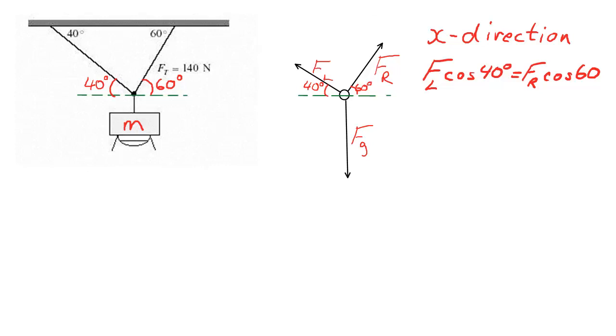It's always a good idea to solve whenever you can. So FR, remember, was 140 Newtons. And we're going to multiply that by the cos 60. And we're trying to solve for FL. And if I do that, divide both sides by cos 40, we end up getting the follow-up.